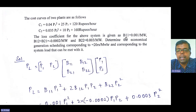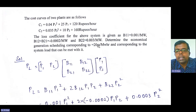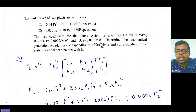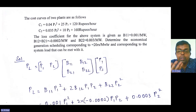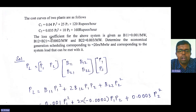The B-loss coefficients are given and lambda is also given. We need to determine the economic generation schedule corresponding to 20 rupees per megawatt hour. The unit of lambda is rupees per megawatt hour. Sometimes lambda is not directly labeled — it will be given as a value like 20 rupees per megawatt hour, so based on the units you need to identify it as lambda, and then you can easily solve the problem.